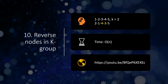The tenth problem is reversing nodes in groups of k in a singly linked list. You pick the first k elements and reverse them, then the next k elements and reverse them, and so on. If fewer than k elements remain you reverse that partial group only. For example with k equal to 2, groups of two are reversed throughout the list. This must be done in O(n) time, and a link to the detailed explanation is provided.